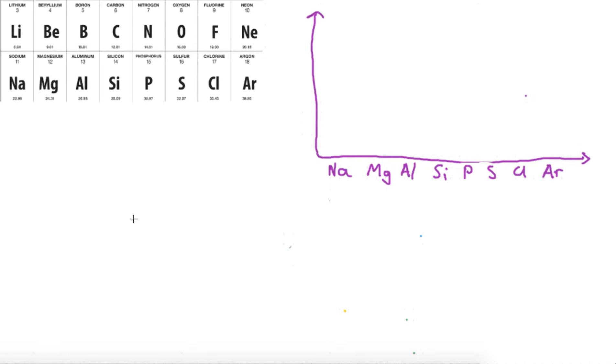When discussing the trend in melting or boiling points across the period, let's first establish that group 1 to 4 are solids at room temperature, but group 5 to 8 are gases.